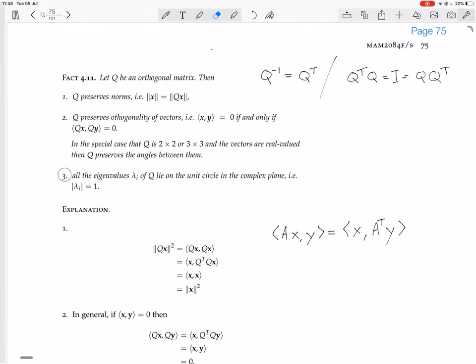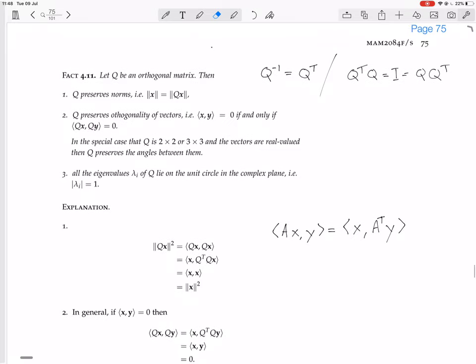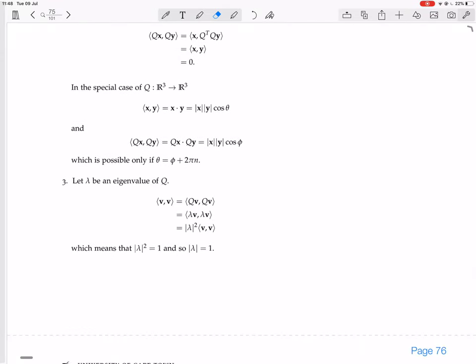The final thing, three, that all the eigenvalues of Q have a modulus of 1. Now, suppose that lambda is an eigenvalue of Q. Let lambda be an eigenvalue of Q with V an eigenvector. The point is, we want to say that V is an eigenvector of Q with eigenvalue lambda.